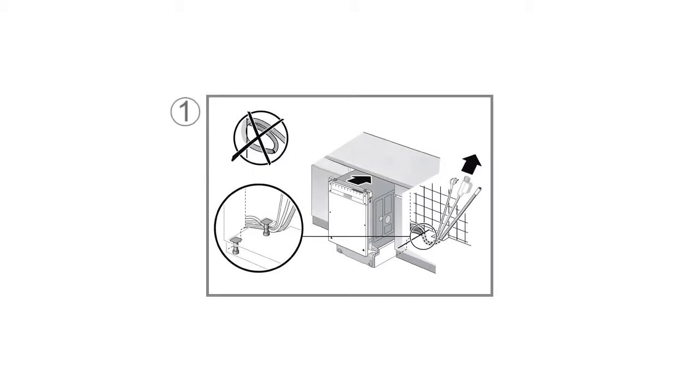As a first step, pull out the dishwasher and check that the inlet and outlet hoses behind the appliance are not trapped or kinked. If the dishwasher is built in, you will need to access the cupboard from the side. If you are not sure how to do that, please follow the mounting and installation instructions of the dishwasher.